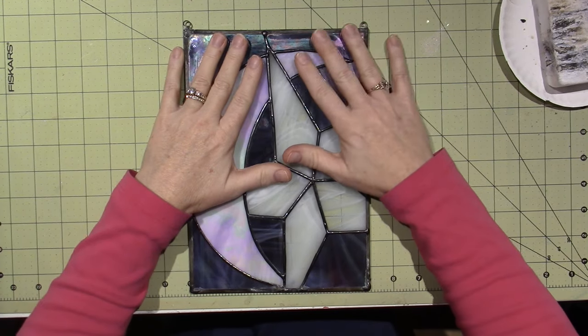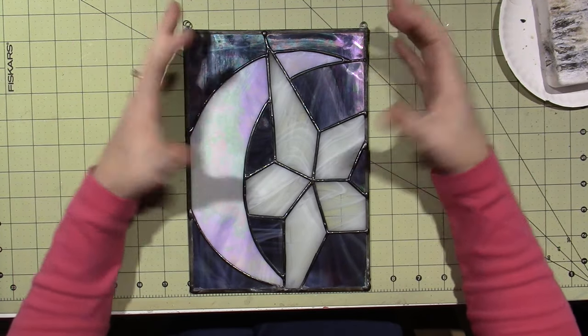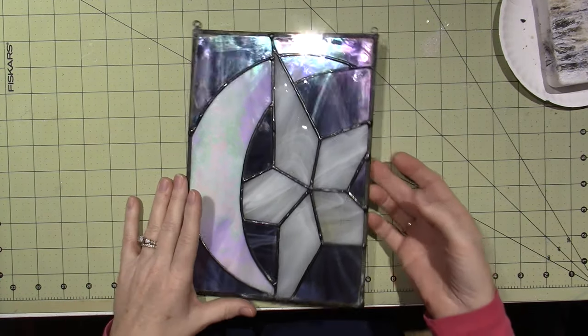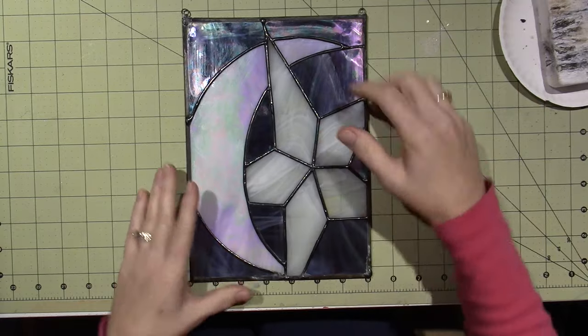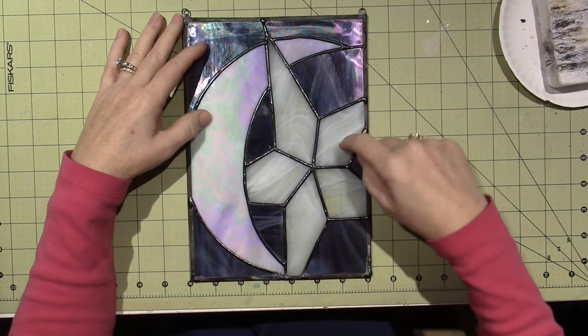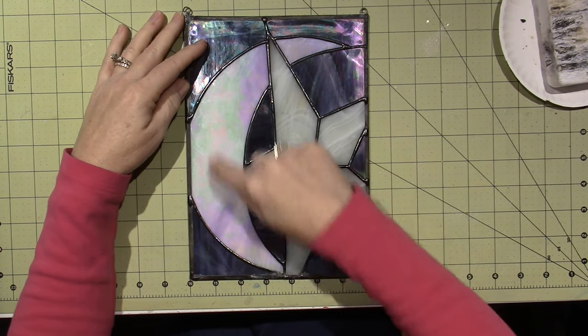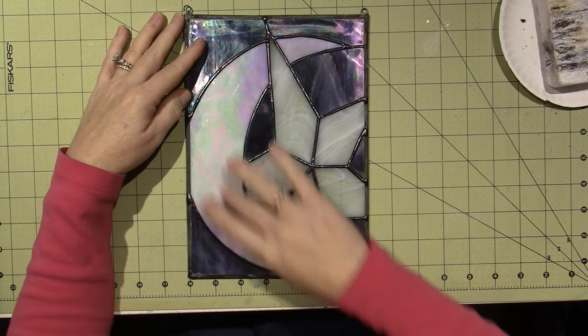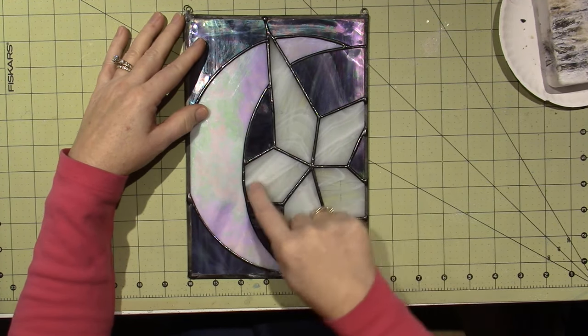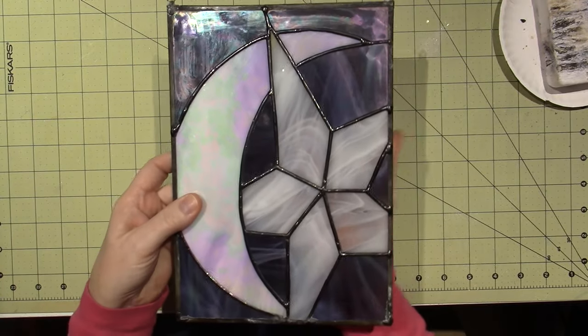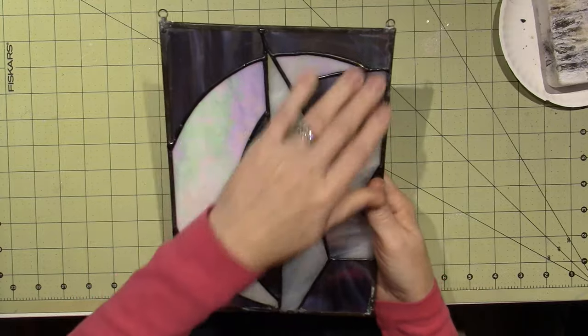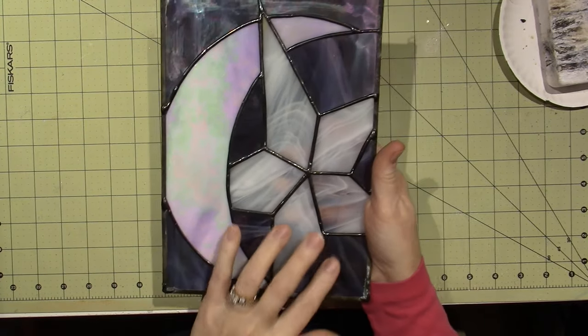I have been getting mine at Hobby Lobby, and you can get it on sale there. They have their coupons, and they have their 40% off time, so go when it's on sale. The star and the moon are different glass. You can see this has like an iridescent coating to it. And this is just more of a sheer glass with some striations through it. And then the purple is actually iridized as well.